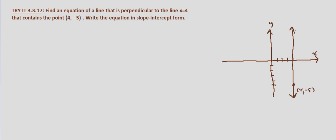Now since x equals 4 is a vertical line, we know that a line that is perpendicular to it is going to be a horizontal line.